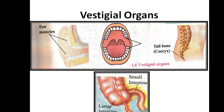The third evidence is vestigial organs. What are vestigial organs? These are organs which are underdeveloped or useless. Some examples found in the human body are ear muscles, tailbone, and appendix. These organs had some functions in ancient human beings, but now, as a result of evolution, they have become functionless. These are known as vestigial organs.